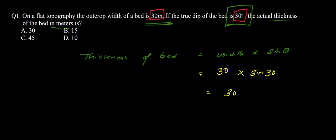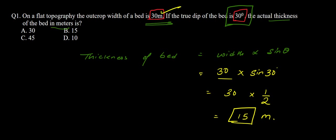Sine 30 degrees, as we know, is 1/2, that is half. So it will be 30 × 1/2, which equals 15. So basically 15 meters is the actual thickness of the bed. The answer is 15 meters.